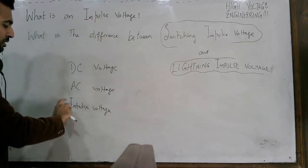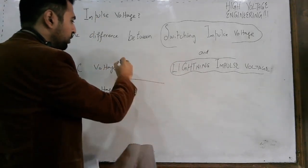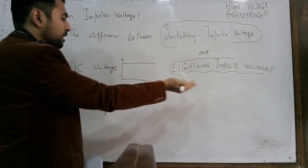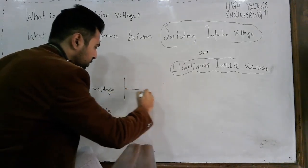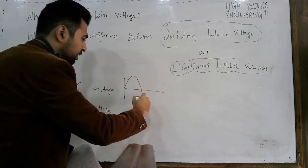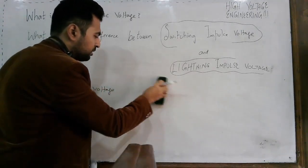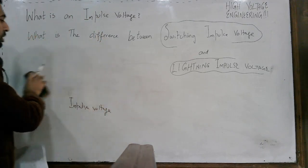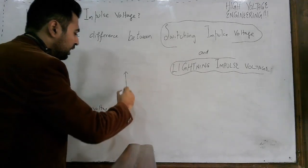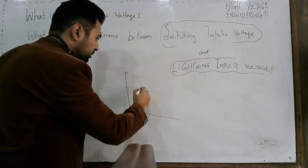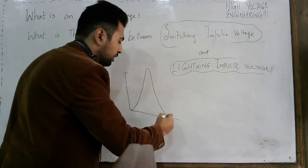Impulse voltage is one of its kind. DC voltage is a type of voltage whose magnitude retains for an infinite period of time. AC voltage is a type of voltage whose magnitude changes its polarity and is normally sinusoidal. Impulse voltage is a type of voltage which reaches its peak in a minimum possible time and then decays. This is an impulse voltage.